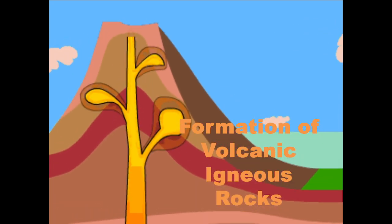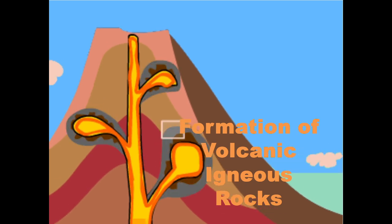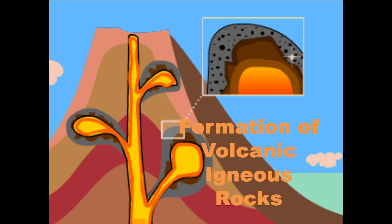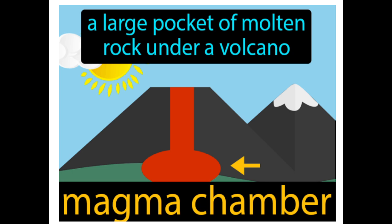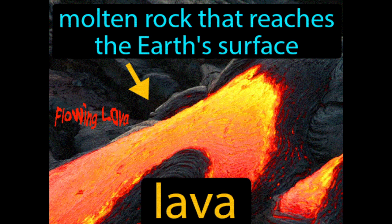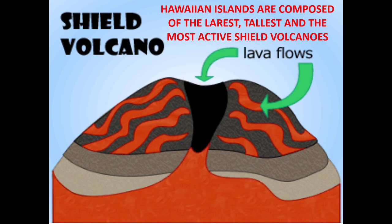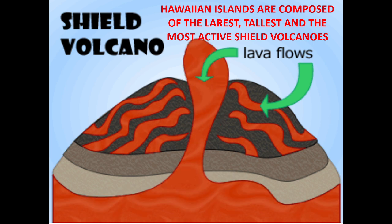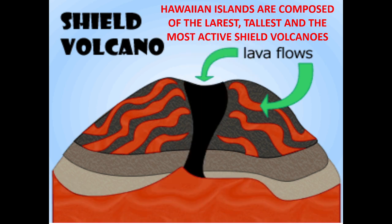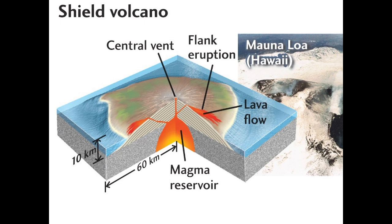Formation of volcanic igneous rocks. A large pocket of molten rock under a volcano is the magma chamber. Molten rock that reaches the Earth's surface is called lava. Hawaiian Islands are composed of the largest, tallest, and most active shield volcanoes. Shield volcanoes have a central vent, flank eruption, lava flow, and a magma reservoir.